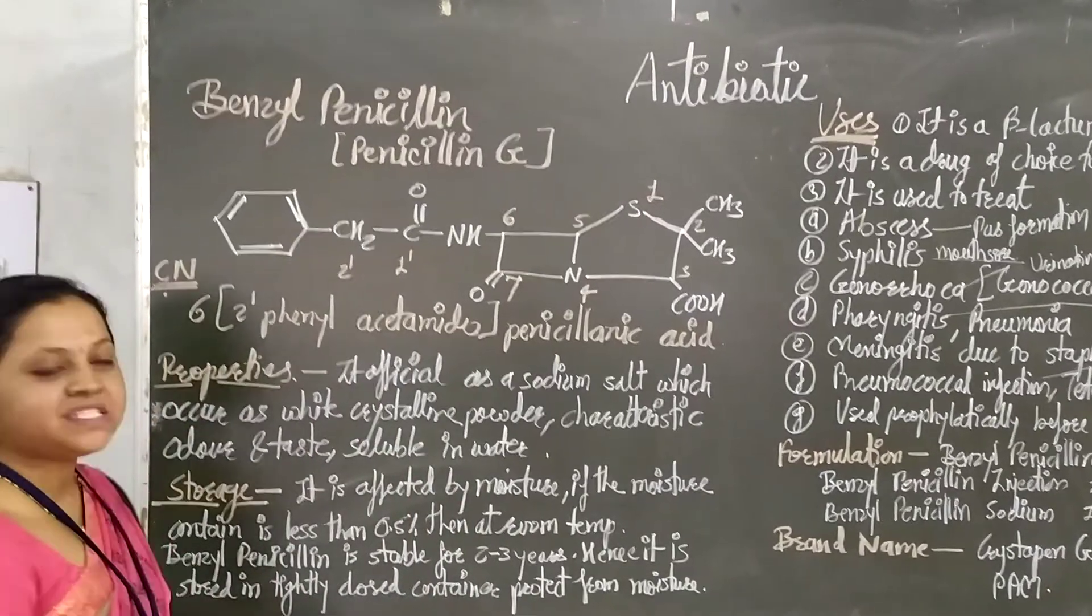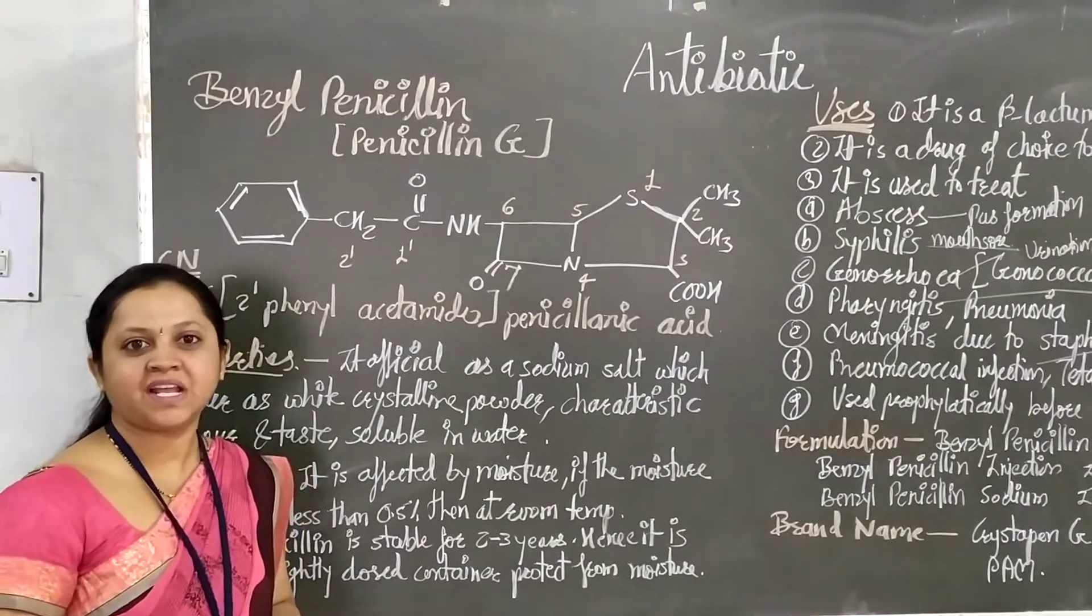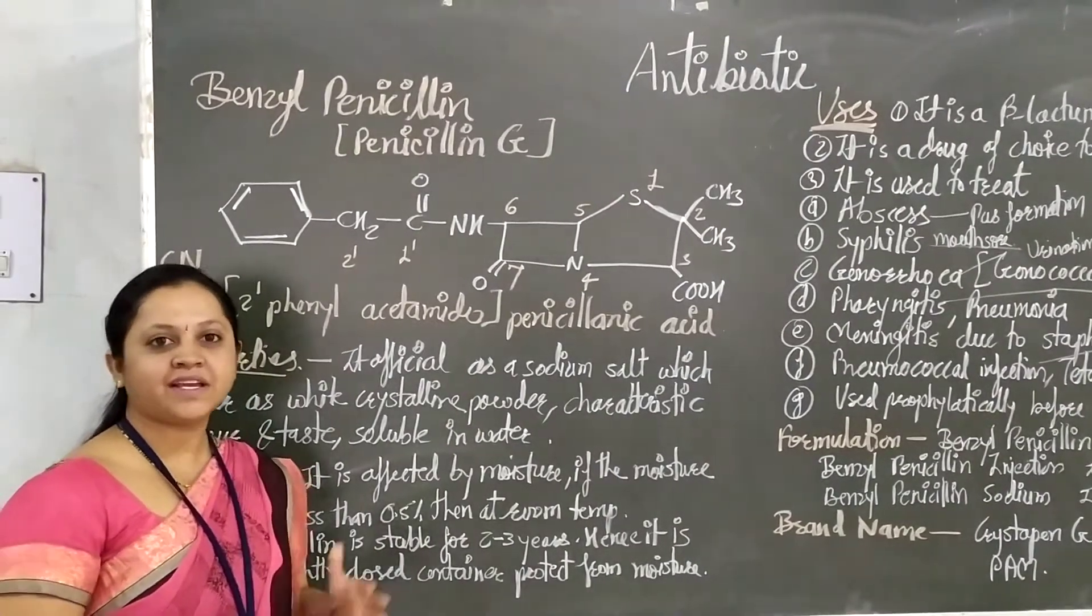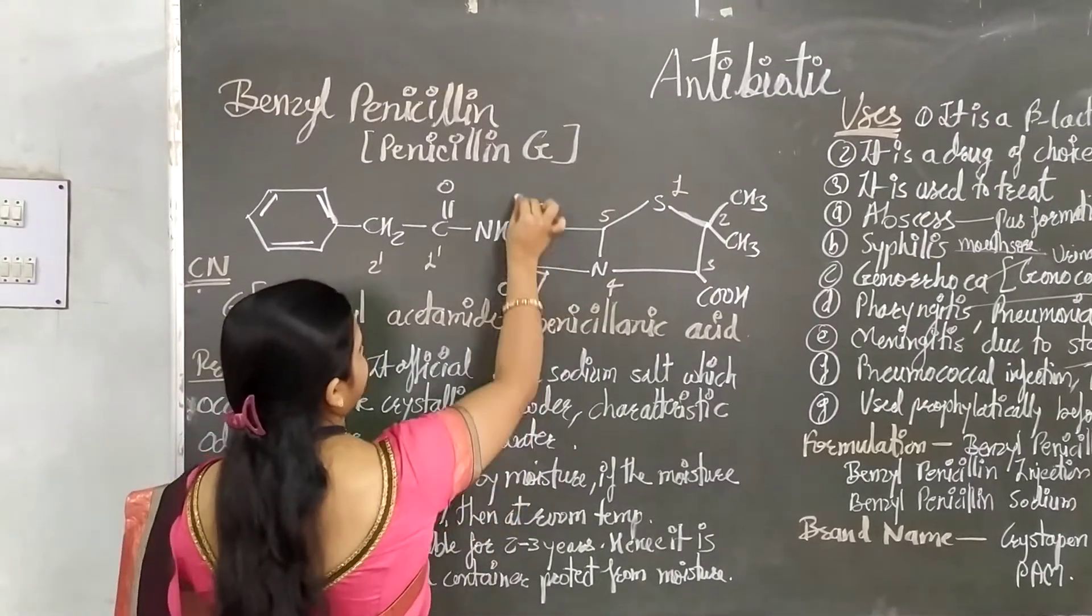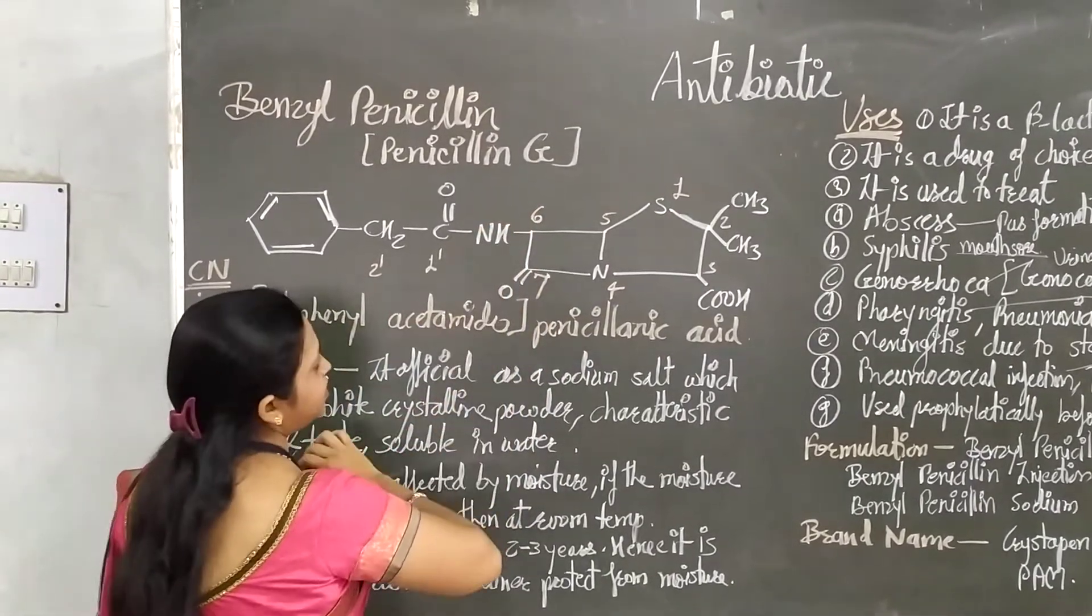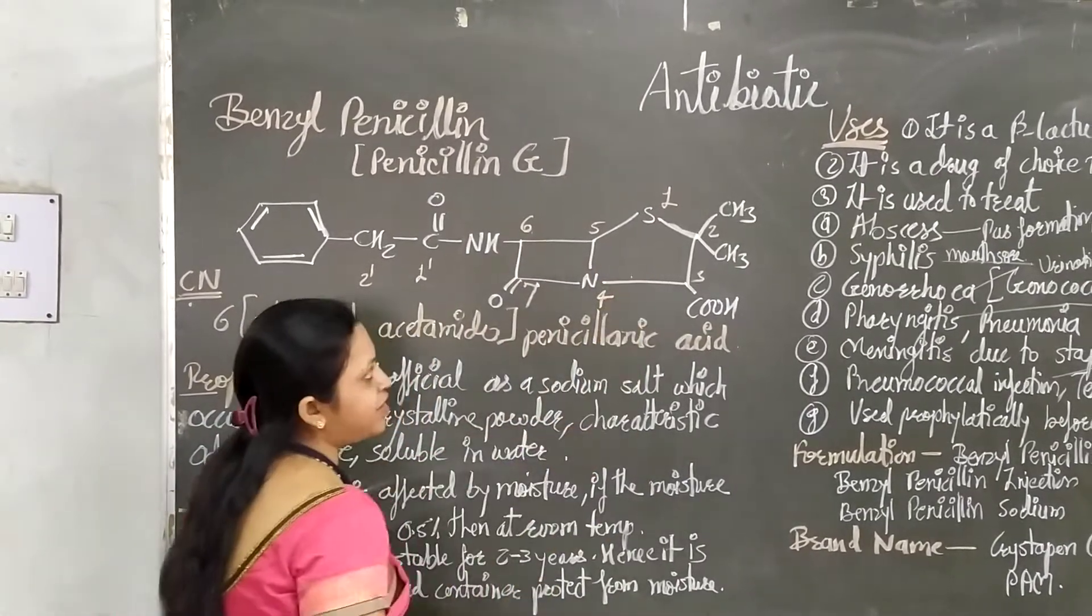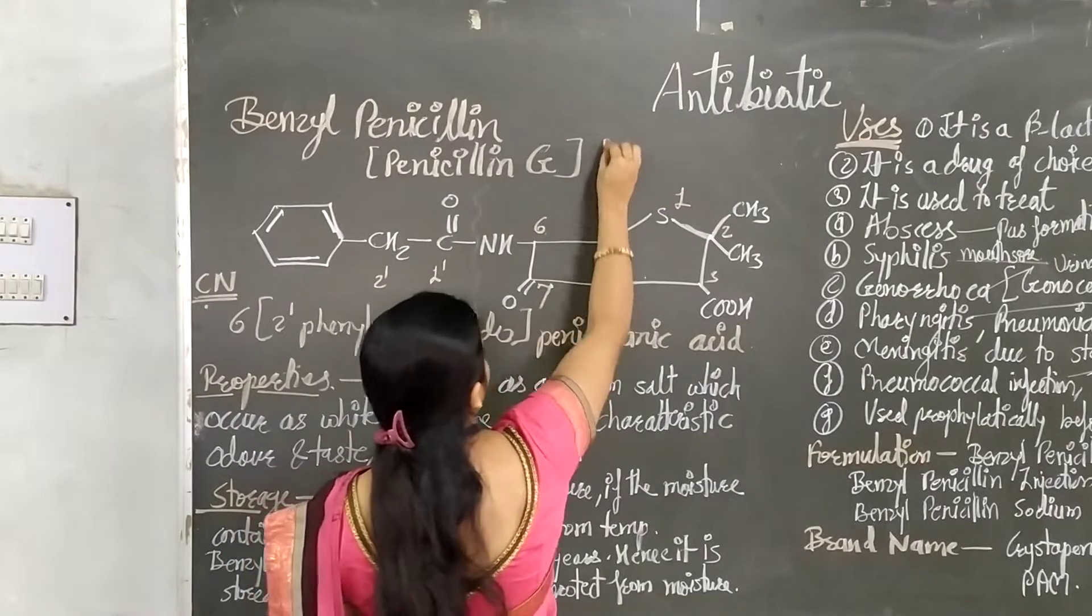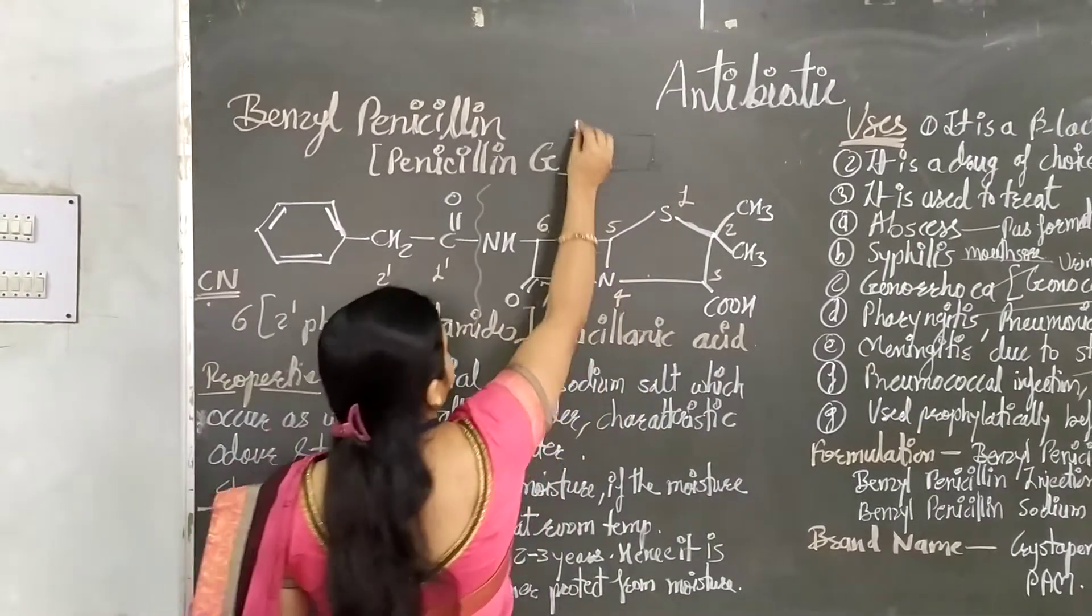We have already found that the penicillin group is derived from 6-aminopenicillanic acid. So here we have the penicillin structure. This is the 6-aminopenicillanic acid portion. This is the 6th position of aminopenicillin. This is the beta-lactam ring - a 4-membered ring having a carbonyl group.